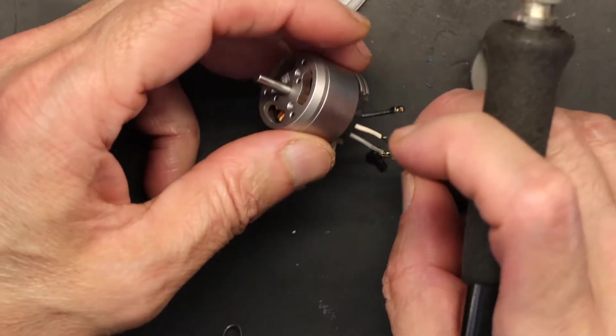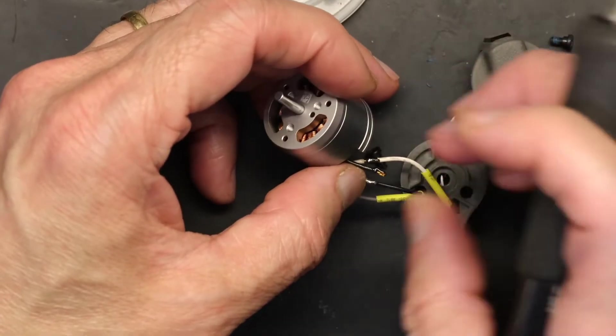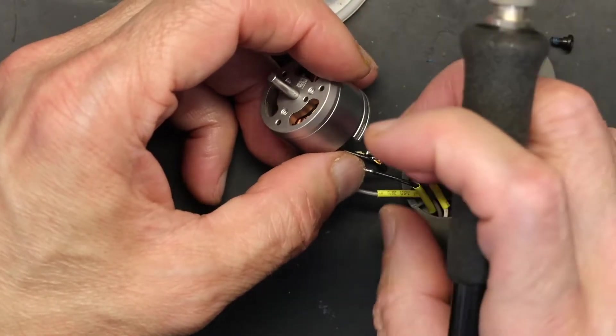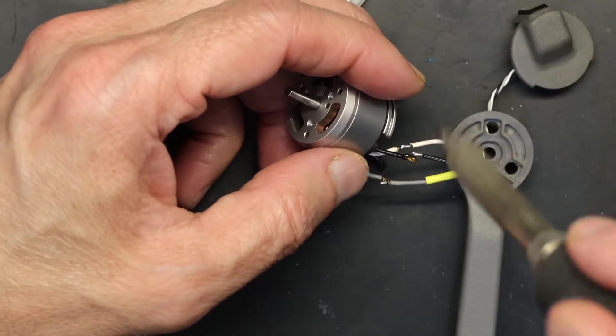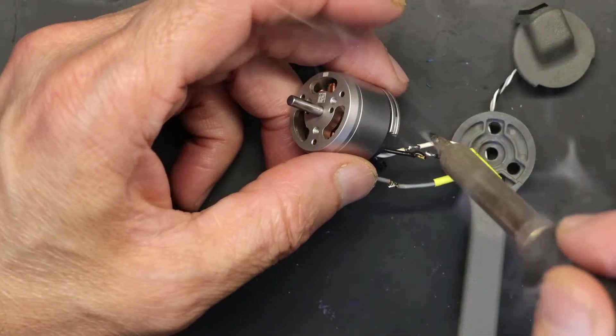Make sure there is no cold soldering joint. If there is, do it again. It's good to do it two, three times than to get a cold soldering joint and have the drone fall from the sky because that's thousands of dollars.